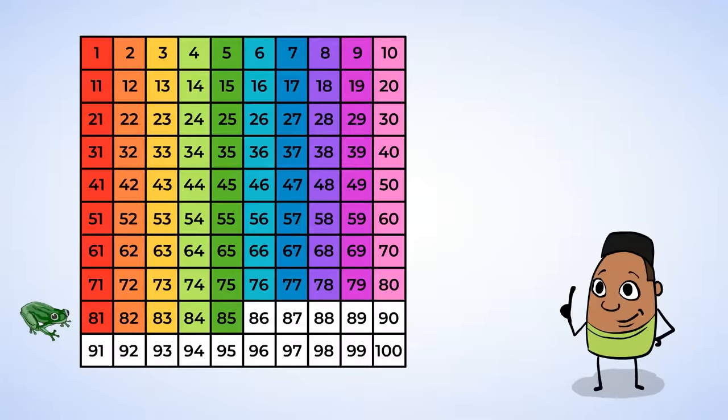And after 85 comes, well, let's look at the light blue numbers. They all end in 6. So after 85 is 86. And then 87, 88, 89, 90.